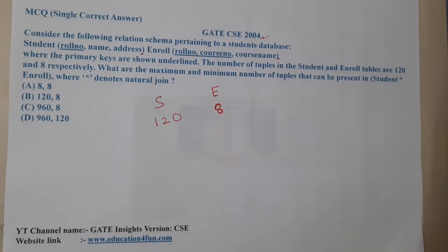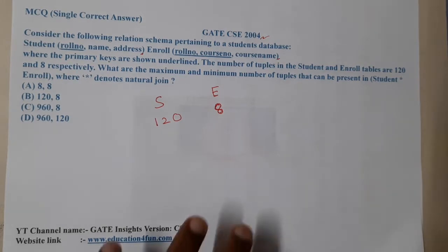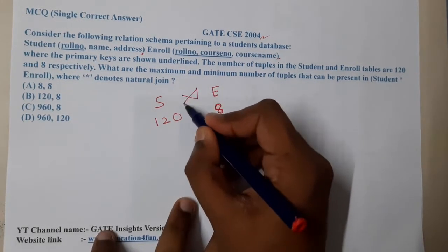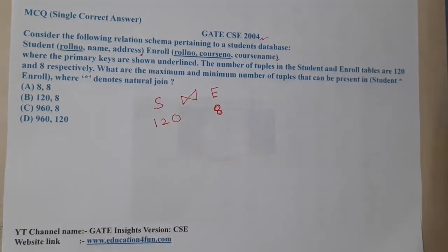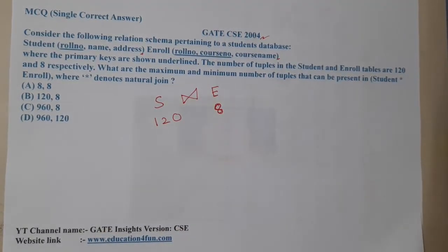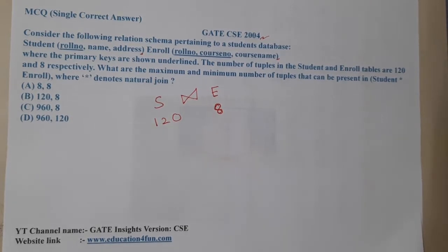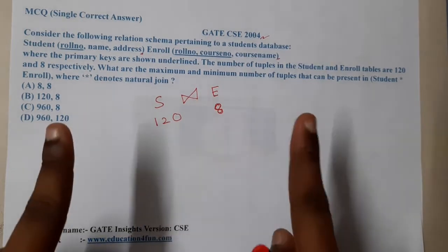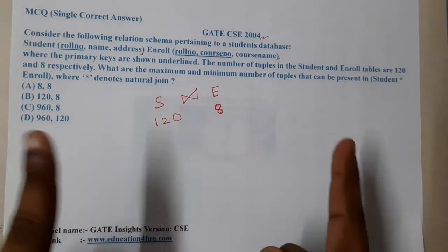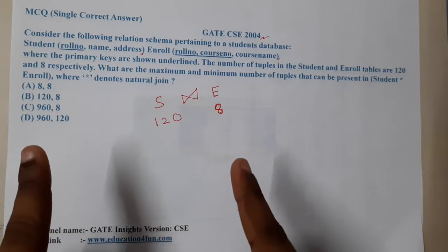The question asks: what are the maximum and minimum number of tuples that can be present in Student natural join Enrollment? When working with natural join, we always need one common attribute between the two tables — and the only common attribute here is role number.